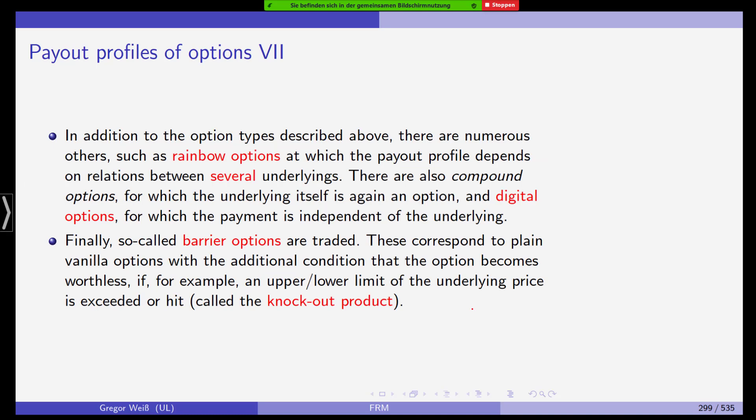Now, in addition to the option types just grabbed off, there are numerous others such as rainbow options in which the payout profile depends on relations between several underlyings. We also have compound options for which the underlying itself is again an option. Digital options, in this case, you don't get the difference between the stock price and the strike. You only get one or zero. And we also have so-called barrier options. They are similar to plain vanilla options only with the difference that they only get active or they get inactive whenever an upper or lower limit of the underlying price is exceeded or hit. So they are sometimes called knock-in or knock-out products. Sometimes they are knocked in. They only become active after the stock price has risen above a certain threshold or they get knocked out if the stock price goes down too much.